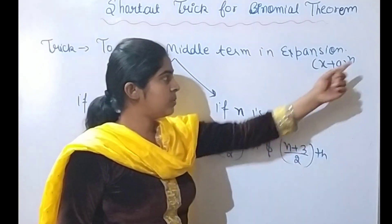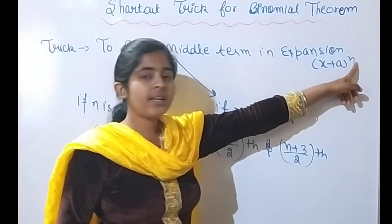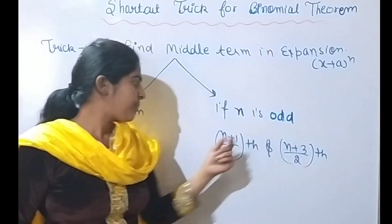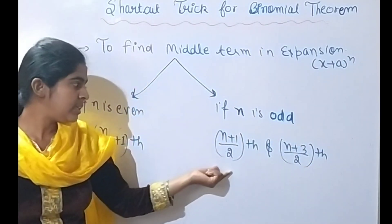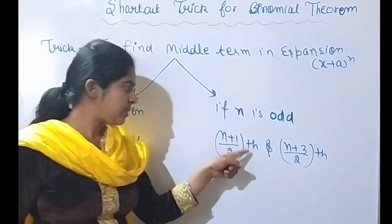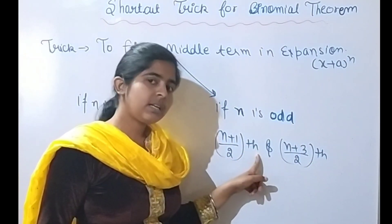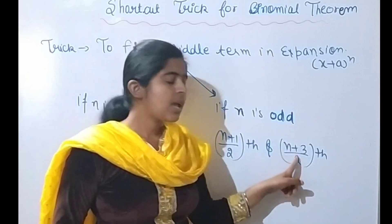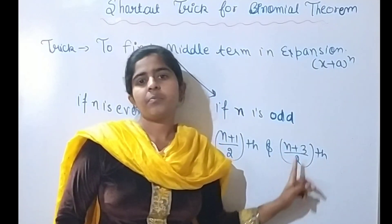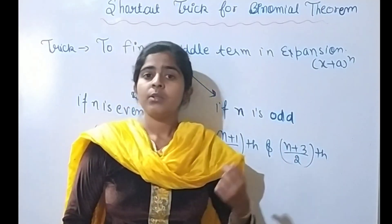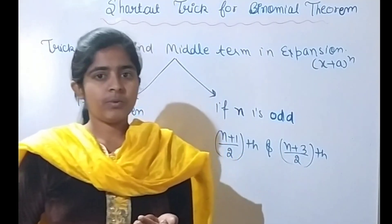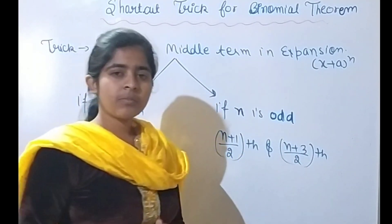Here n is the power, n is the order of the expansion. If n is odd, then we have two middle terms: T((n+1)/2) and T((n+3)/2). So these are the middle terms depending on whether n is even or odd.